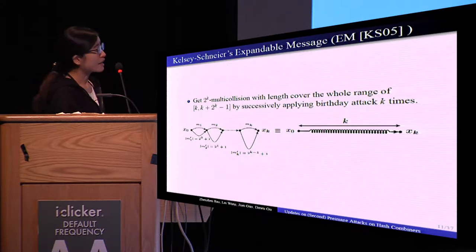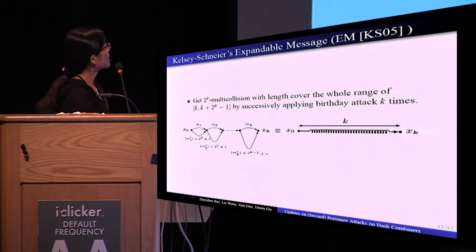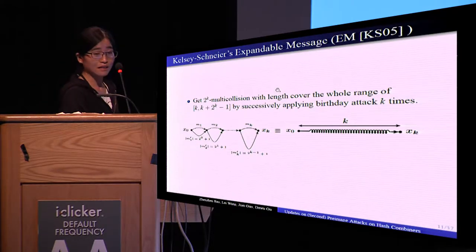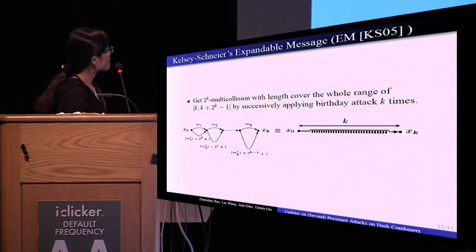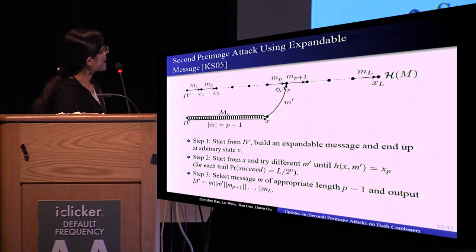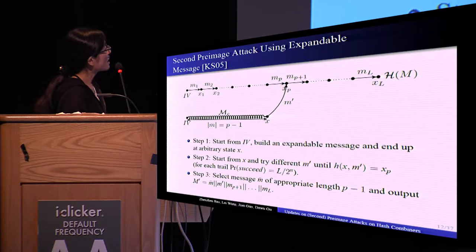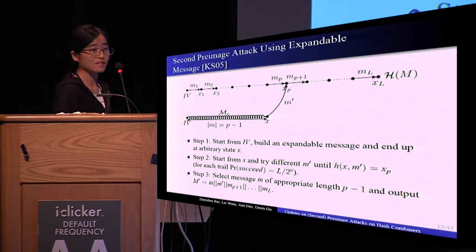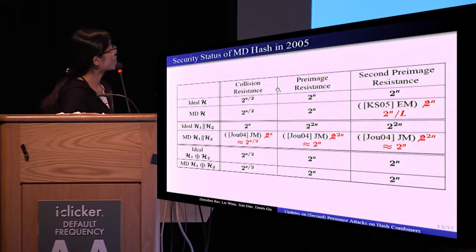The next year, Kelsey and Schneier invented another kind of multicollision known as the expandable message, using a very similar process. However, the message lengths are carefully chosen so that the 2^n messages cover the whole appropriate range of lengths. Using the expandable message, Kelsey and Schneier launched a second pre-image attack on the Merkle-Damgård hash function. The key is that the expandable message can overcome the length strengthening in Merkle-Damgård. This was the security state of Merkle-Damgård hash in 2005.